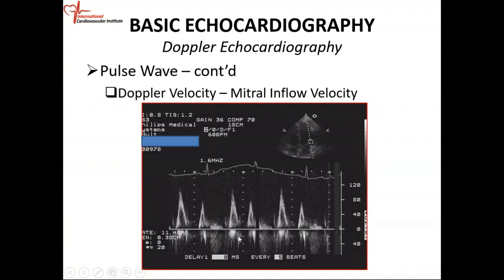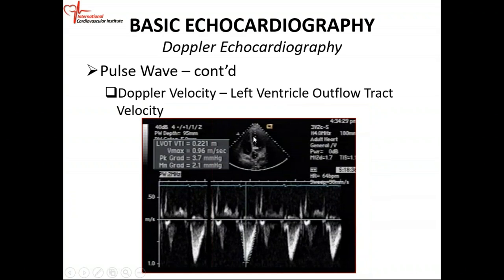Your ECG is on top. Diastole is from the end of the T wave to the beginning of the QRS. This is your E-velocity and your A-velocity.